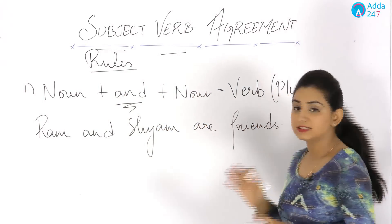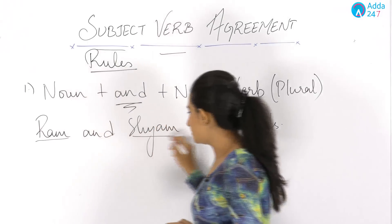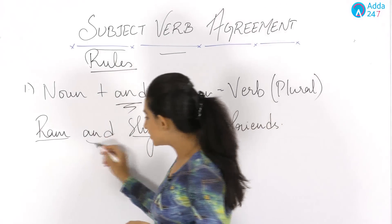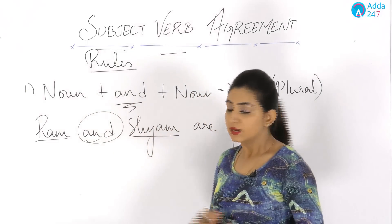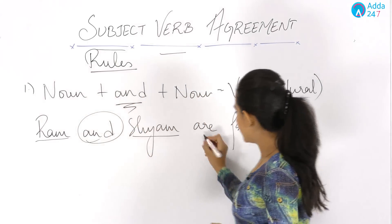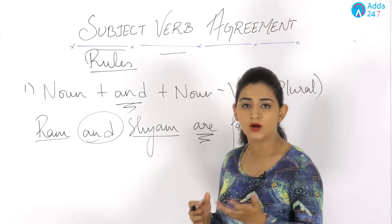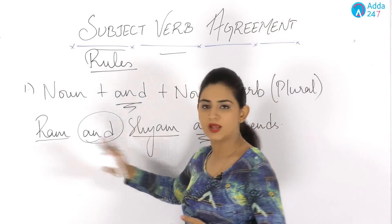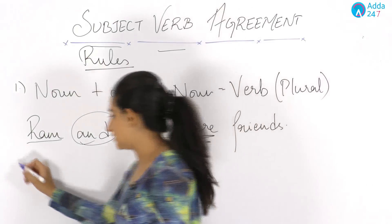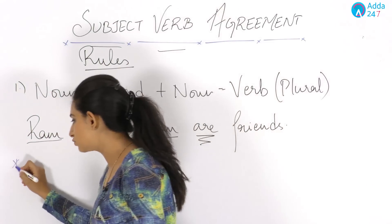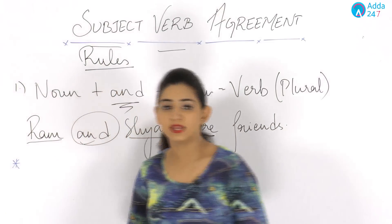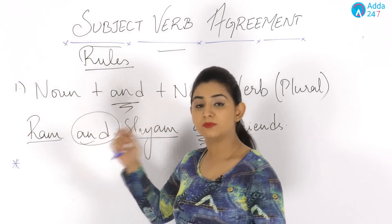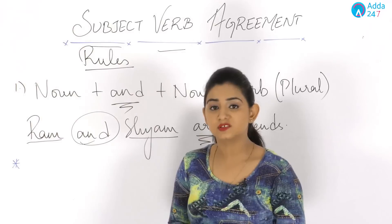In this sentence, Ram is one noun and Sham is another, joined by 'and', so we use a plural verb. However, we have an exception: if two nouns are joined by 'and' but considered as a single unit, the verb used will be singular.